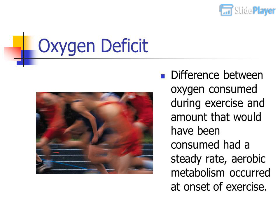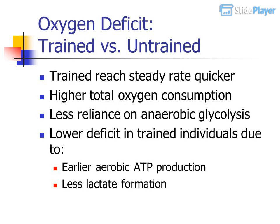Oxygen deficit is the difference between oxygen consumed during exercise and the amount that would have been consumed at a steady rate. Aerobic metabolism is limited at the onset of exercise. Trained individuals reach steady state quicker, have higher total oxygen consumption, less reliance on anaerobic glycolysis, a lower deficit due to earlier aerobic ATP production, and less lactate formation.